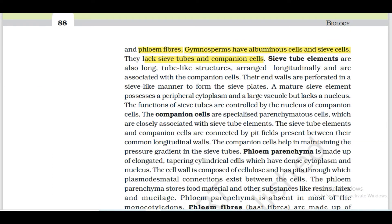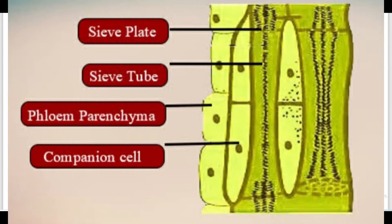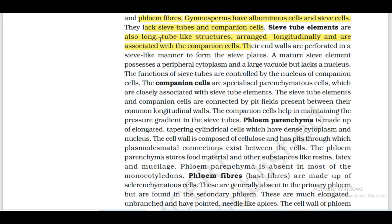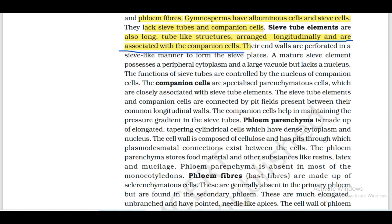Sieve tube elements are long tube-like structures arranged longitudinally and associated with companion cells. They are long tube-like structures arranged longitudinally - the association with companion cells is the main point. Sieve tube elements and companion cells are closely associated with each other.